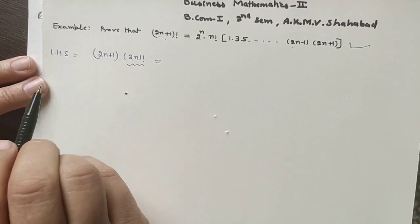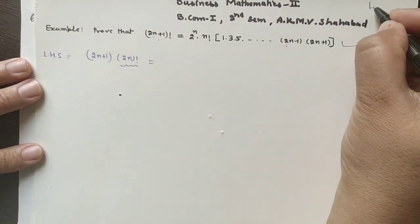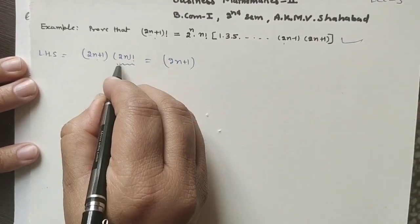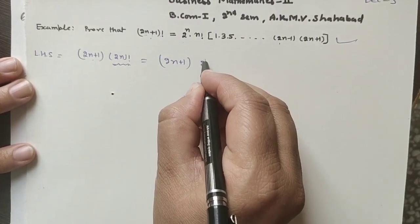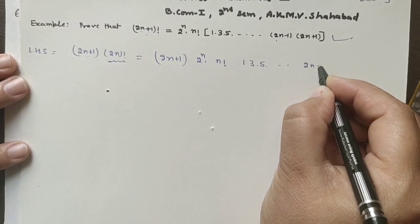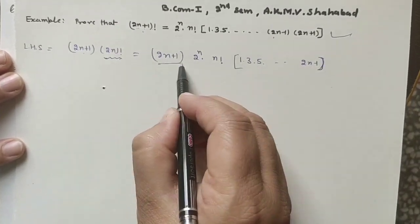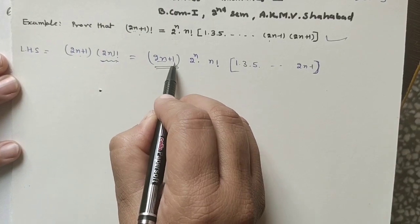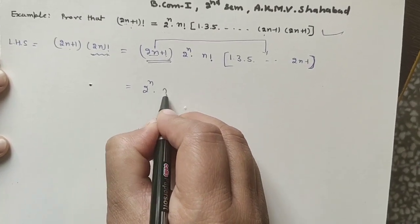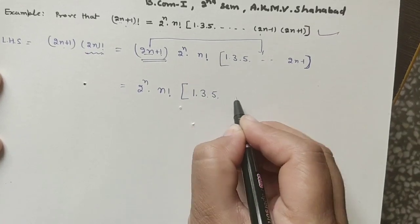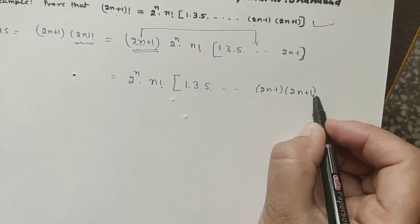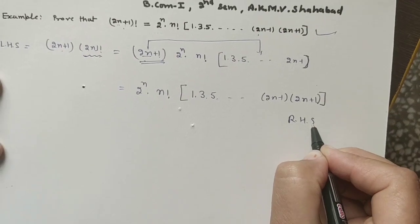We use the result from the previous example where we calculated (2n)! equals 2 to the power n times n factorial times 1 into 3 into 5 into (2n minus 1). Since (2n plus 1) is one more than the even number 2n, it is odd. We multiply this factor with the odd product category, giving (2n plus 1)! equals 2 to the power n times n factorial times 1 into 3 into 5 into (2n minus 1) into (2n plus 1). This is the right hand side.